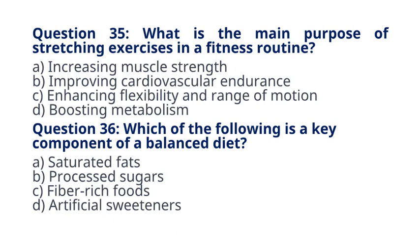Question 36. Which of the following is a key component of a balanced diet? A. Saturated fats. B. Processed sugars. C. Fiber-rich foods. D. Artificial sweeteners. The correct answer to question 36 is option C. Fiber-rich foods. Explanation: Fiber is an essential component of a balanced diet, promoting digestive health, and helping regulate blood sugar levels.